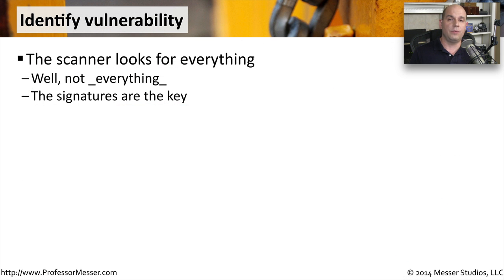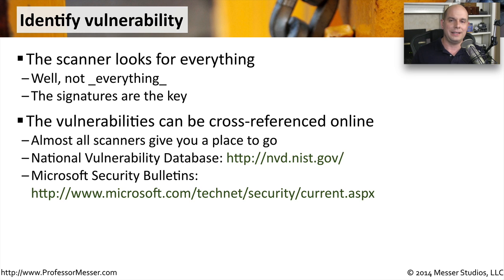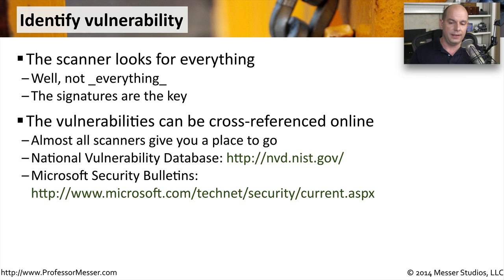The scanner is looking for a lot of information, but it can only find the things it knows about. A scanner generally has a database of signatures it knows to look for in different devices and operating systems, and these scanners will have an update process so you can have the latest signatures. Almost all vulnerabilities can be listed and categorized online. The National Institute of Standards and Technology has a great database at nvd.nist.gov. Microsoft also keeps a list of all their security bulletins, with technical details that give history and insight into the severities of these vulnerabilities.